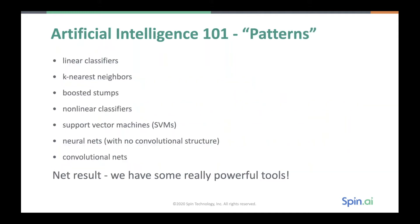Let's deal with artificial intelligence first. Artificial intelligence, in many ways, is partly about patterns. In the case of images, for example, we use things like linear classifiers, k-nearest neighbors, stumps, non-linear support vector machines — I use SVMs a lot myself — neural networks, and convolutional networks. We have some really powerful tools.